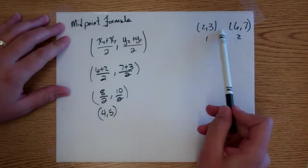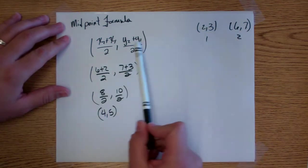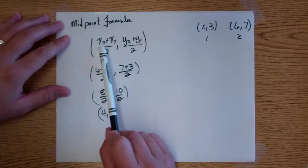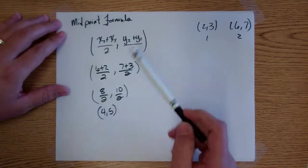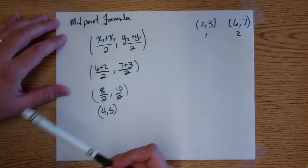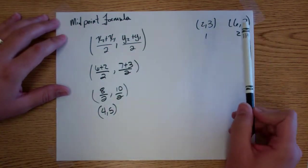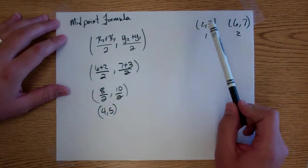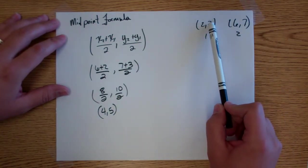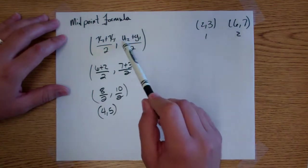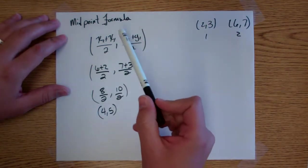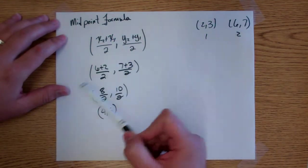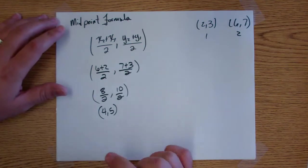So again, midpoint formula — you're given two points, you just have to find the midpoint between them, so you just plug into the formula. They may only give you one point and then the midpoint and make you find the other point. You just plug in what you know and solve for what you don't know.